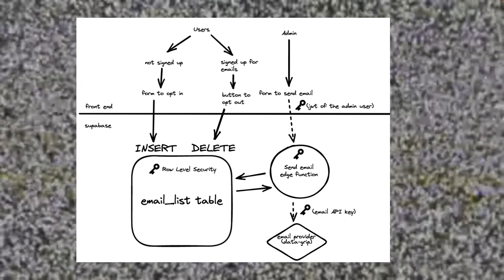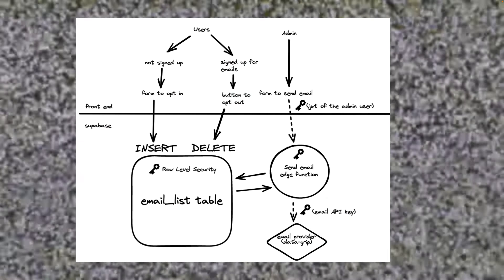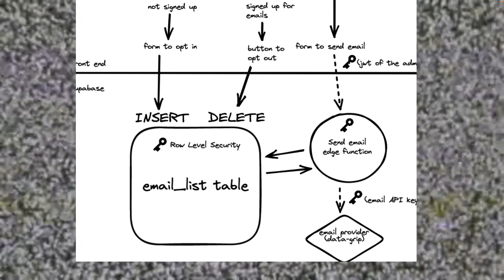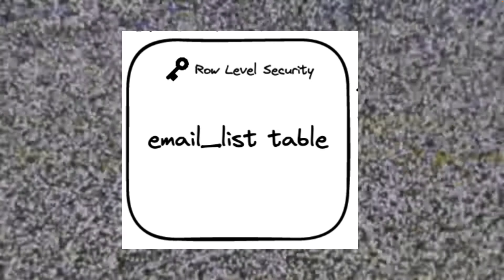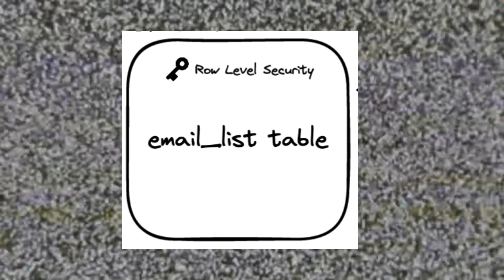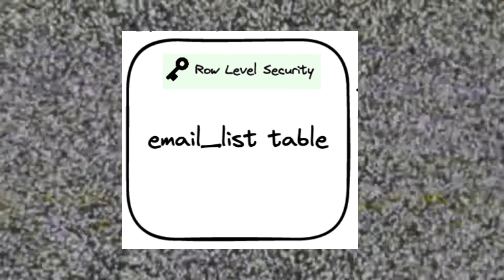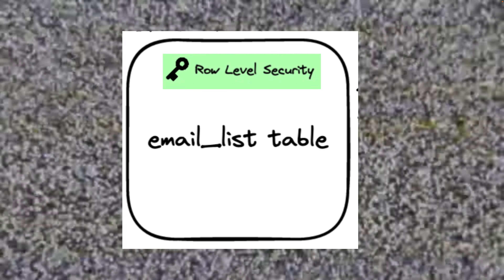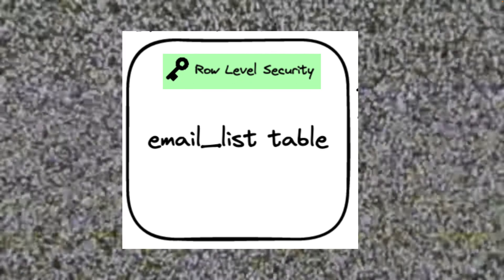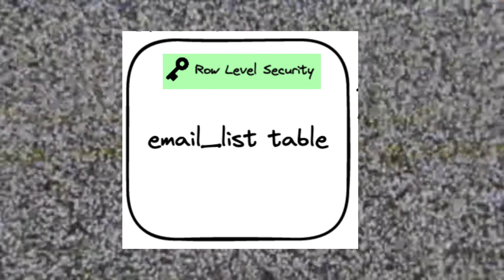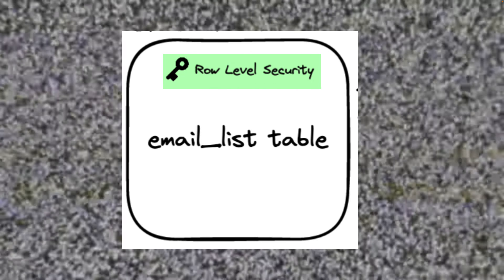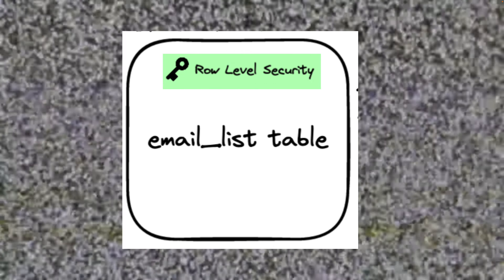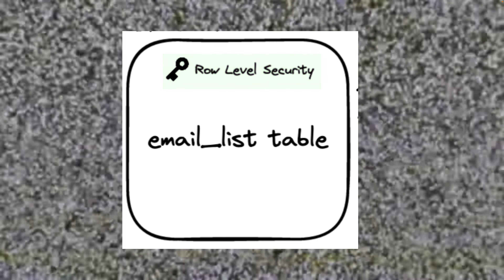Starting with the basic architecture diagram of what we're going to build. We'll start with an email list table that we'll create in Supabase, and we'll enable row level security on this table. So users will only be able to insert, delete, and view information that belongs to them.